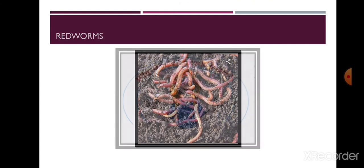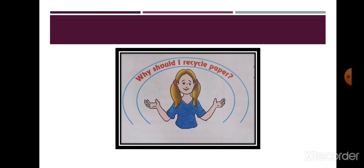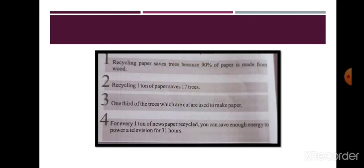Next, why should we recycle paper? Paper is made from the pulp of trees. Whenever you tear a page apart because of a mistake, you must understand that the paper being thrown away is made from trees, and trees give us life and oxygen. Many trees are being cut down for making paper. On our part, we must use paper judiciously and use recycled paper, because recycling paper saves trees.